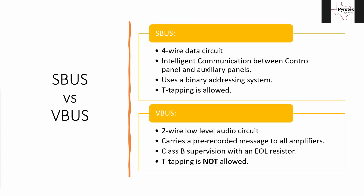The VBUS is a low-level audio circuit — it doesn't have enough power to drive speakers itself. Even if you only have one speaker circuit on a job, you can't skip amplifiers and power it off the VBUS; there's not enough power for that. It just feeds amplifiers, and the amplifiers make the signal strong enough. The SBUS, on the other hand, because of its intelligent communication and addressing, allows T-tapping because the panel will know if any device drops out — it's monitoring individual communication, not waiting for an end-of-line resistor.